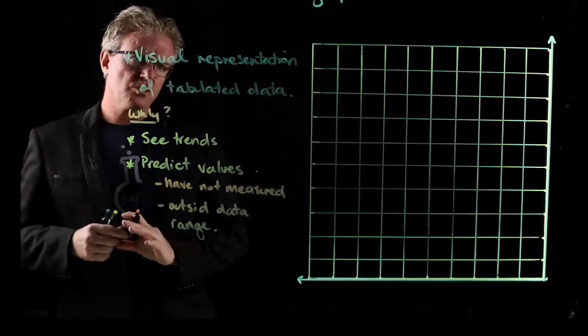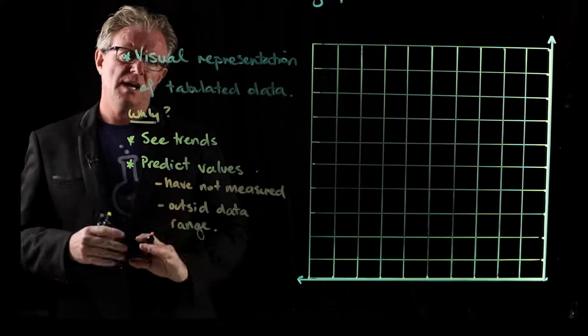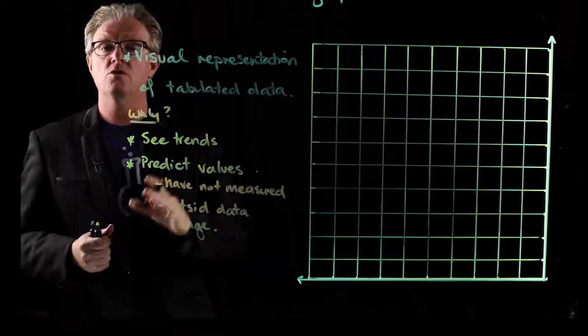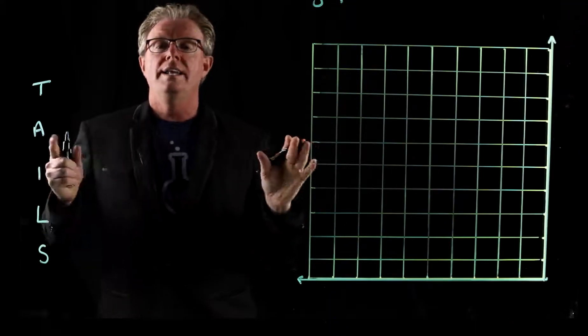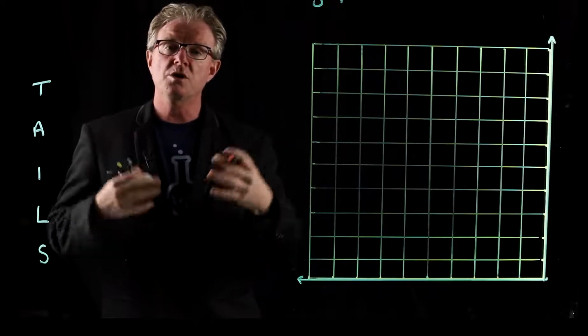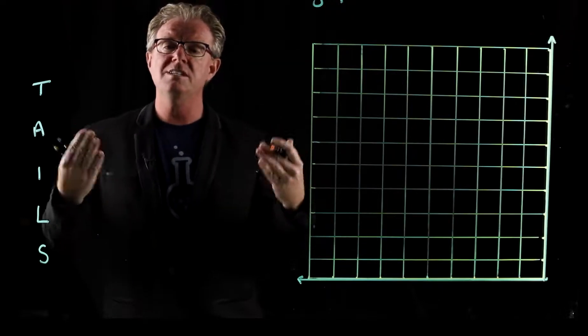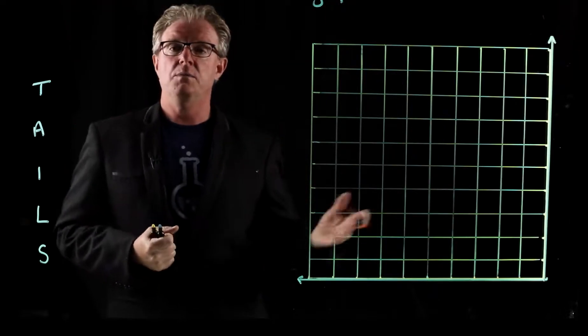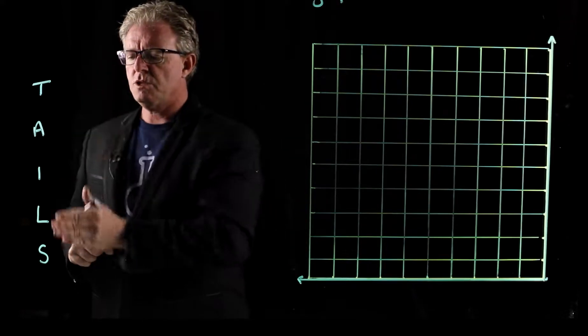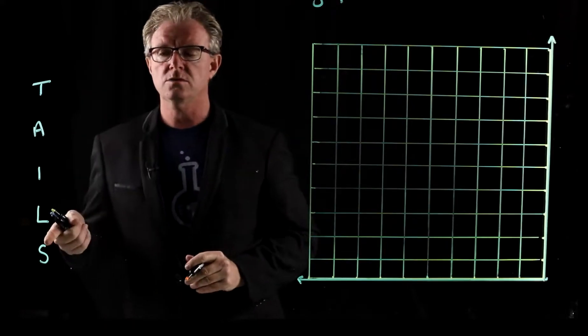So how do we draw a graph though? Let's rub off this and let's see the steps that you can use to draw your graph. Now that you've got a data set, you want to graph it. But how do you do that? Well, you follow these steps all the time and you'll end up with an amazing graph. First thing is we can use this acronym here called TAILS.